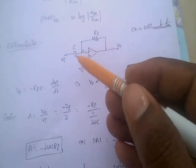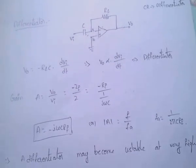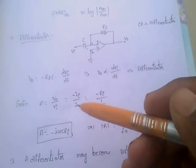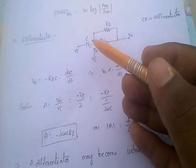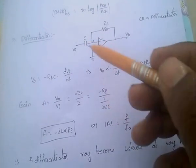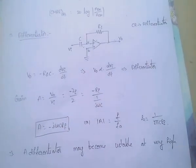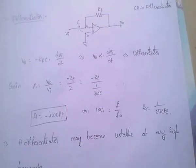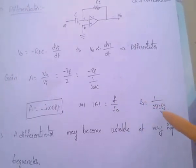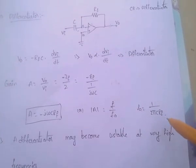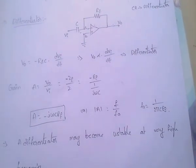V0 equals minus RF into C into dVi/dt; V0 is proportional to dVi/dt — differentiator. Gain A equals V0 by Vi equals minus ZF by Z, that is minus RF over 1/jωC. Capacitor reactance XC equals 1/jωC. So A equals minus jωCRF, or mod A equals F/FA, where FA equals 1/(2πCRF). This differentiator may become unstable at very high frequencies.